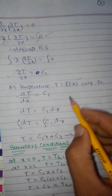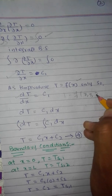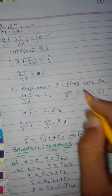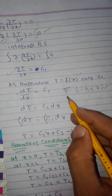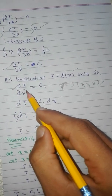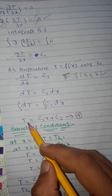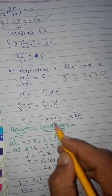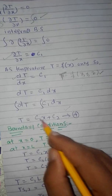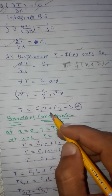If temperature were a function of x, y, and z we would use a partial differential equation. But here temperature changes only in the x direction, so we use the ordinary differential equation dT/dx = C1. Integrating again, we get the temperature distribution T = C1x + C2, which is a linear equation showing temperature as a function of x. The constants C1 and C2 are obtained from the boundary conditions.